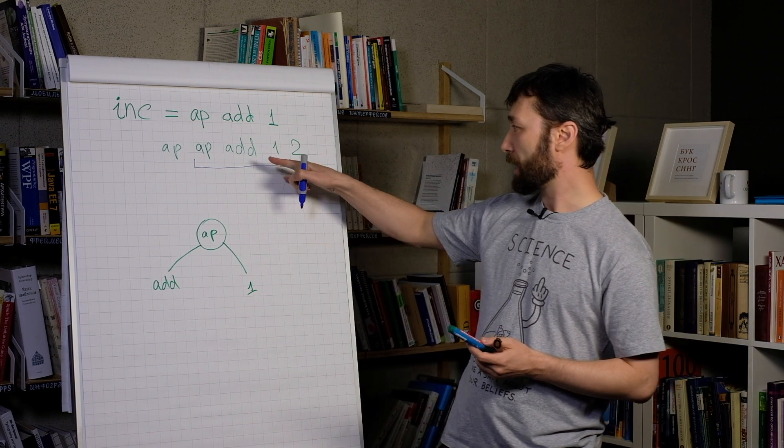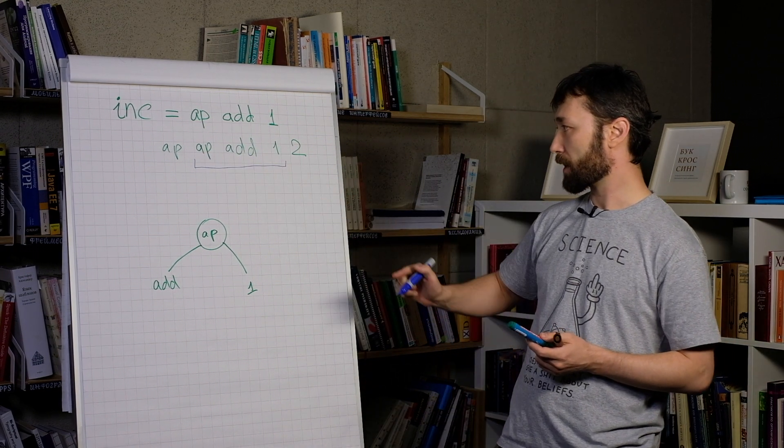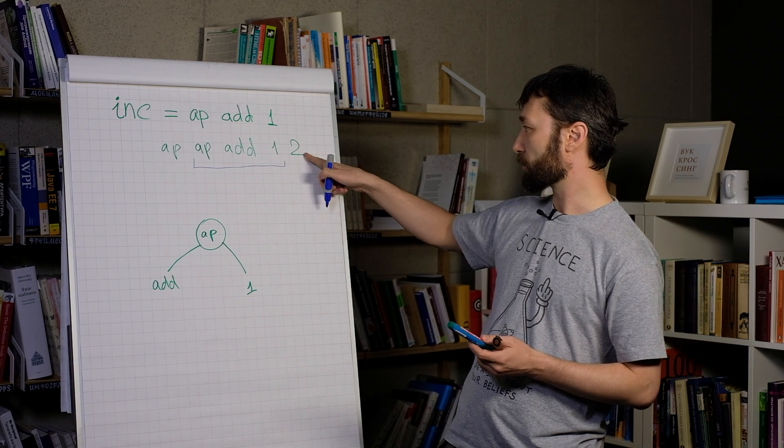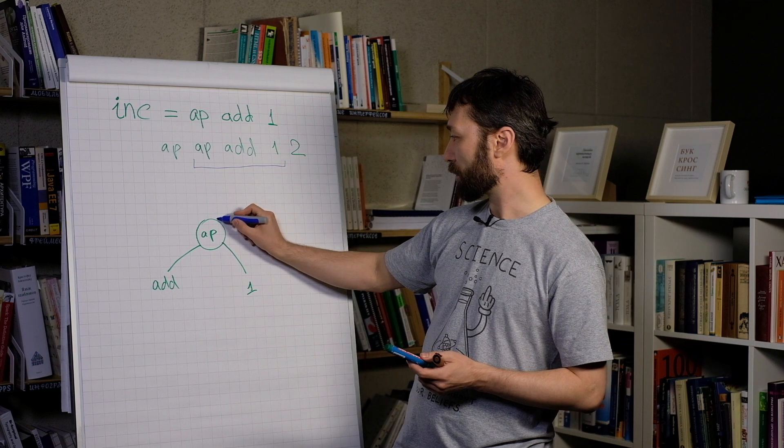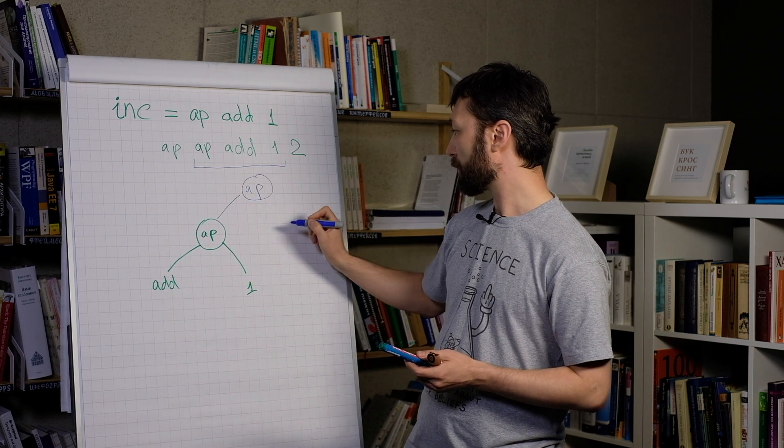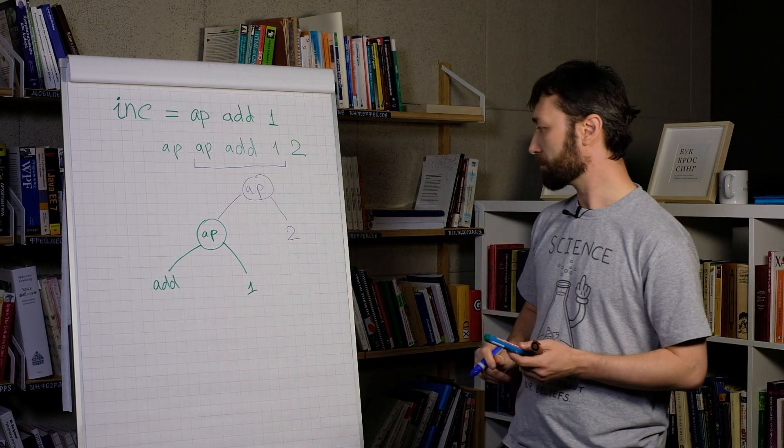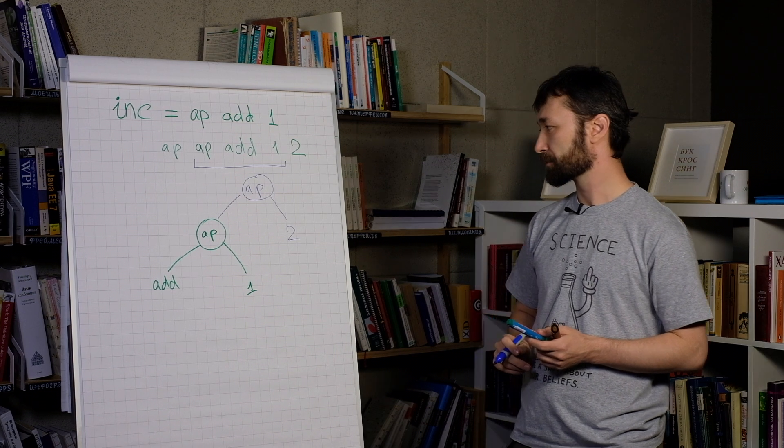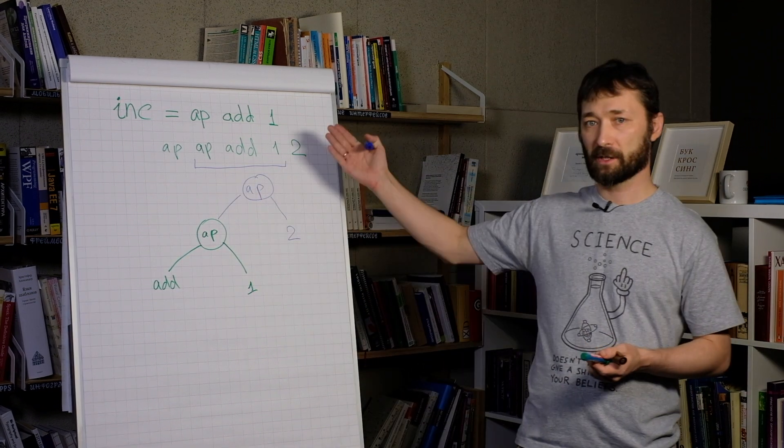And now, we treat this part as a function and apply this function to this argument. So we can draw a new part of this tree. This one. And this tree exactly represents this expression.